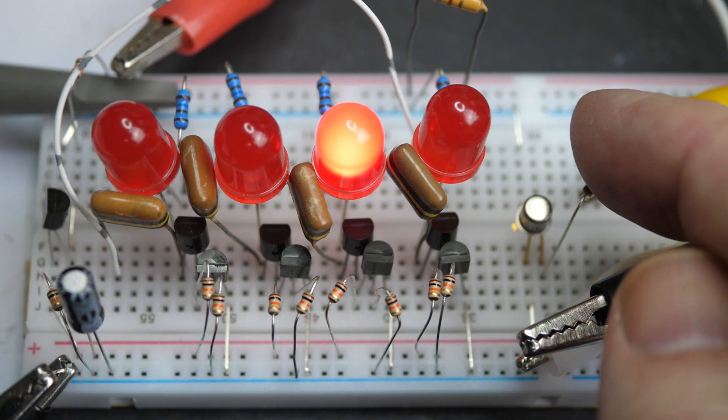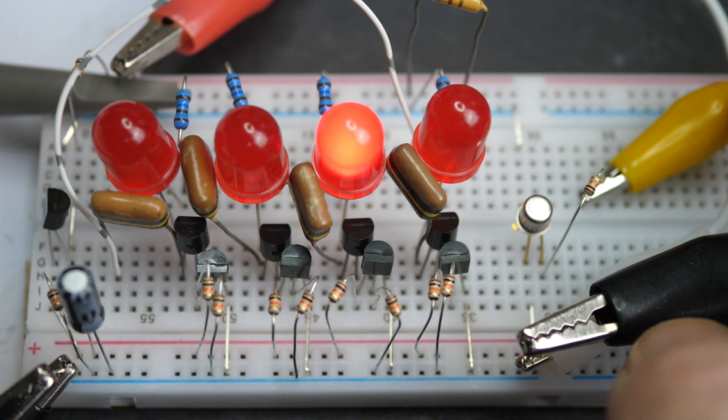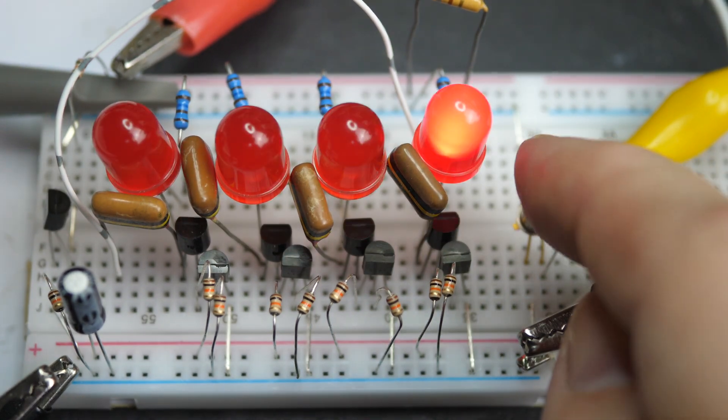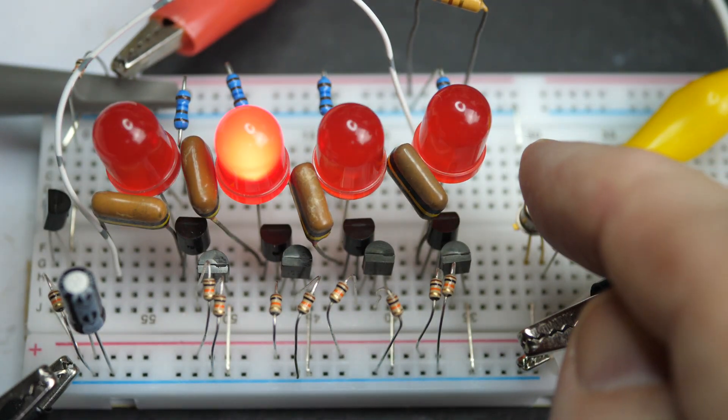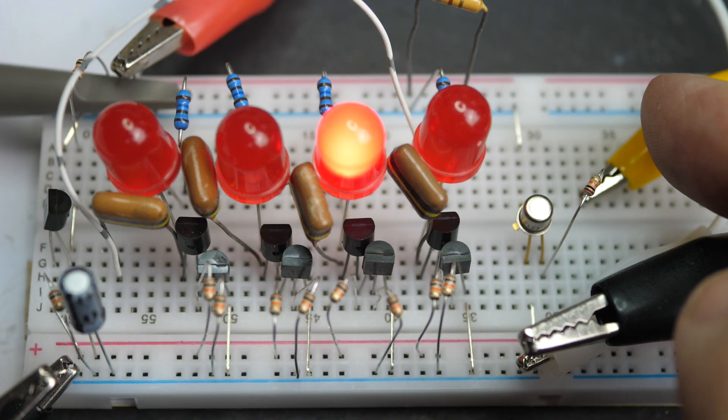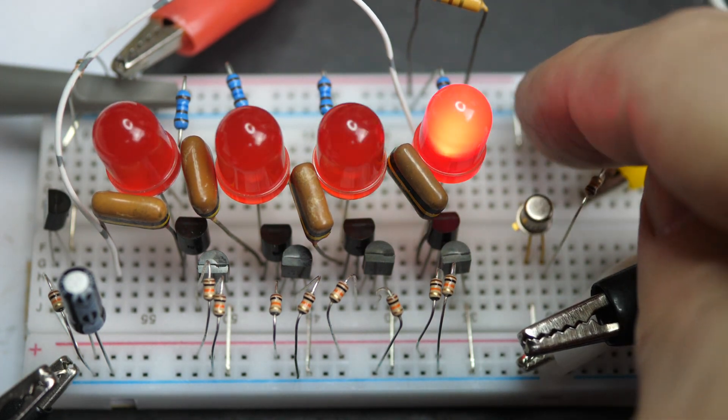And over this side I've got the transistor in a little metal case there, the TO-18 case, fed from the signal generator on this yellow wire. And that's acting as a kind of buffer amplifier to amplify the signal from the signal generator which is giving us a square wave and feeding up to the top there through that link.